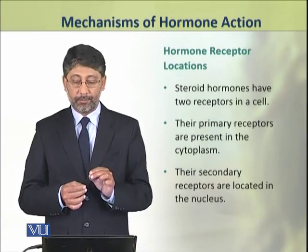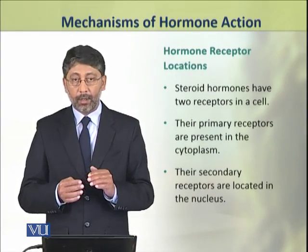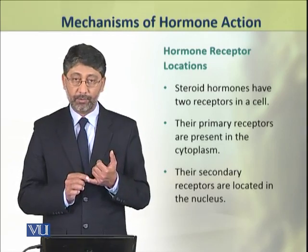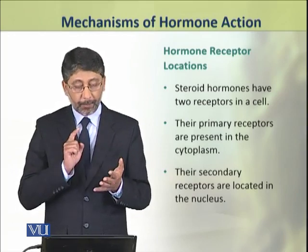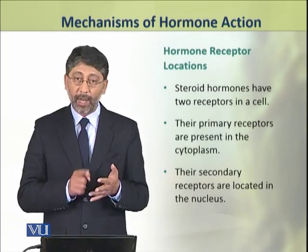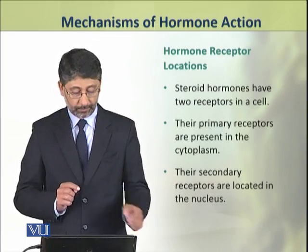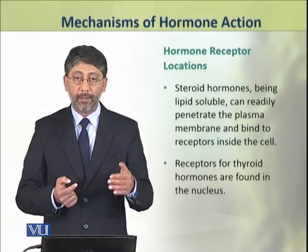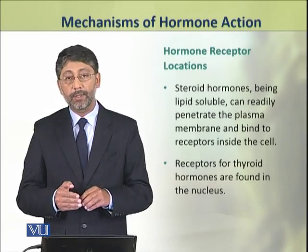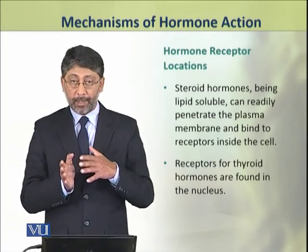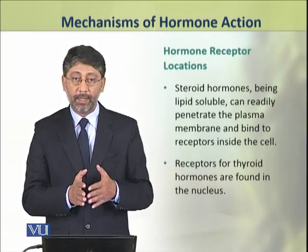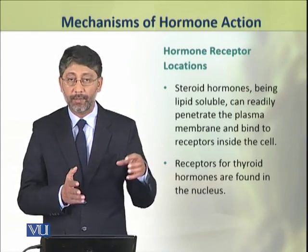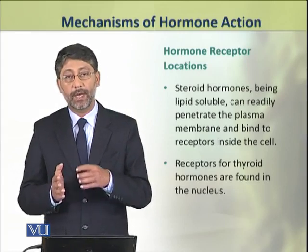The steroid hormones and lipid-soluble hormones can enter the cell, so their receptors are present inside the cell. The steroid hormones have two receptors in a cell: the primary receptors are present in the cytoplasm, while they have secondary receptors inside the nucleus. Being lipid-soluble, they can easily enter into the cytoplasm and bind to the receptors inside the cell. Lipid-insoluble hormones cannot enter the cell, so they are forced to bind on the plasma membrane, but steroid hormones can enter the cell and therefore they can bind with the cytoplasmic receptors.